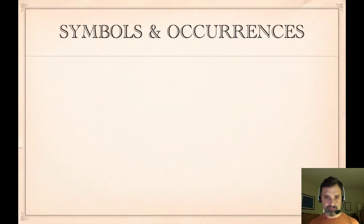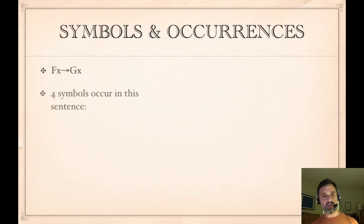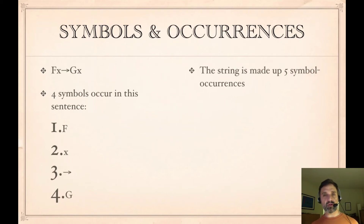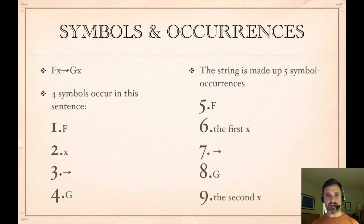A little bit of terminology. We need to distinguish between symbols and occurrences of symbols. So if we look at the sentence 'if Fx then Gx', we might say that there are four symbols that occur in the sentence: F, x, the arrow, and G. But there are five symbol occurrences making up this sentence: there's the F, there's the first x, there's the arrow, there's the G, and there's the second x. So sometimes we're going to need to distinguish between a symbol or a kind of symbol on the one hand, and occurrences of that symbol on the other hand.